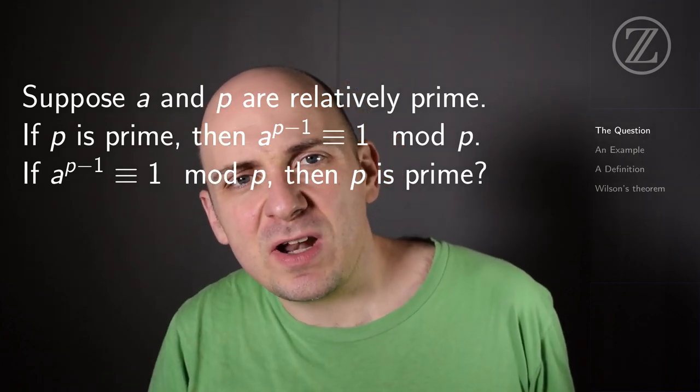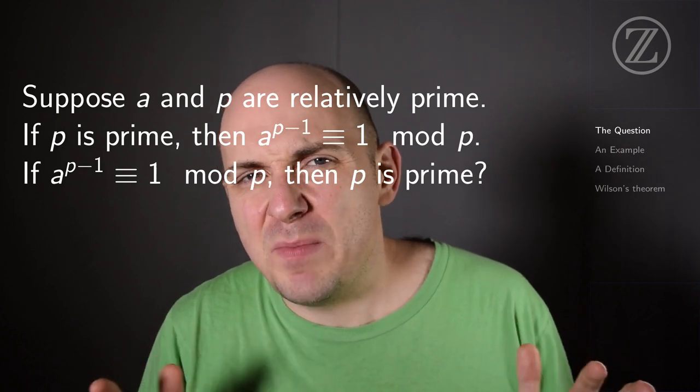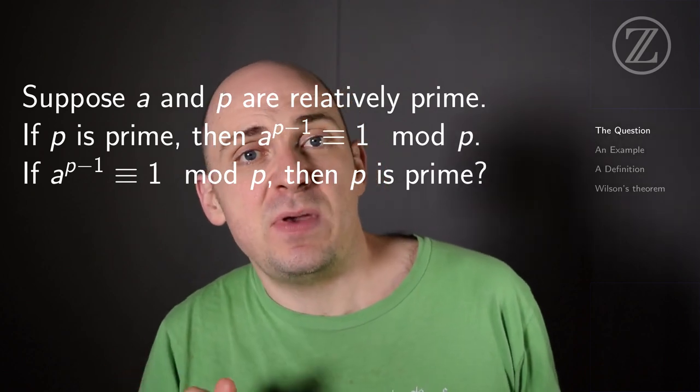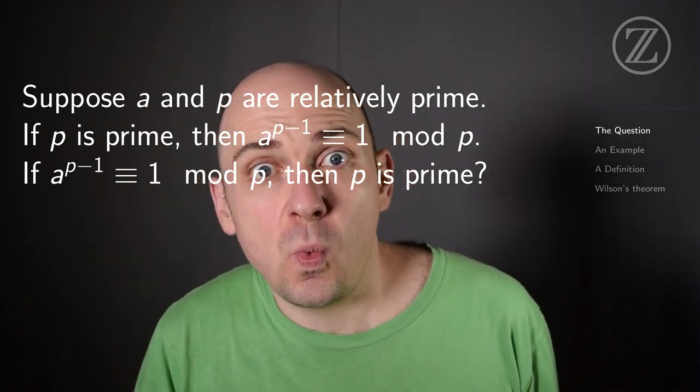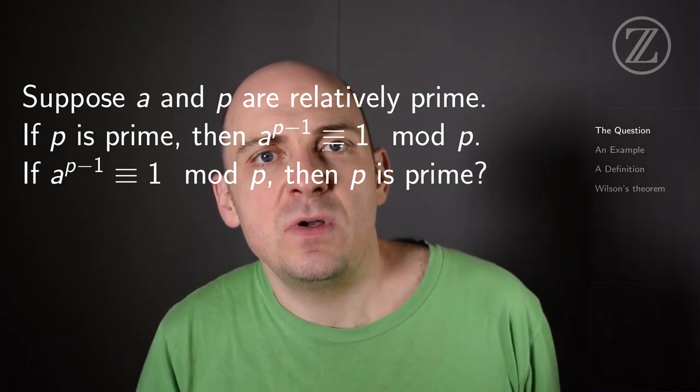But now let's suppose that we want to try to look at the converse. Let's suppose that we didn't know that p was prime, p is just some number, but we did know that for every integer a relatively prime to p, we knew that a raised to the p minus 1 power were congruent to 1 modulo p. Would that be enough information to conclude that p is prime?